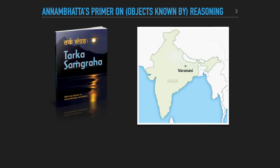So we don't know much about the life of Anambatta, apart from the fact that he lived for a time in Varanasi, probably though he was born in the south of India. We do know that he wrote works other than the primer on reasoning, or really it's called the primer on objects known by reasoning, as he explains in the text. We'll talk about those objects in a minute.